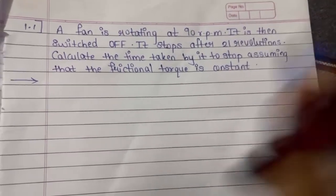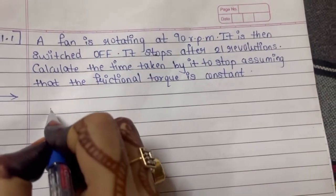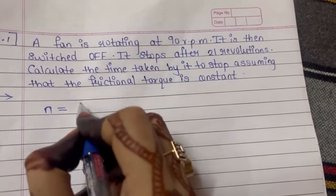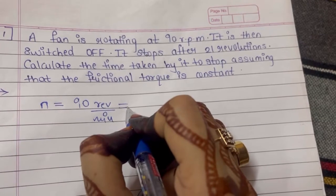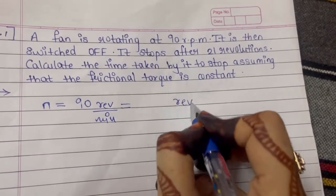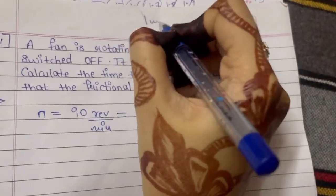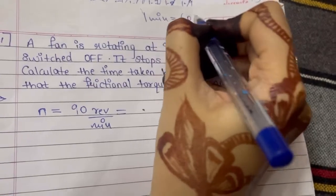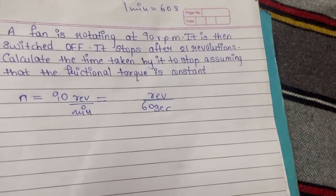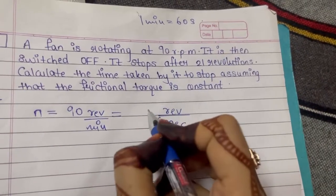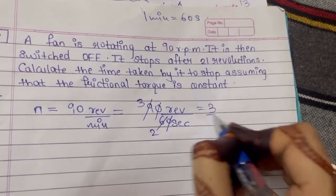Starting with problem 1.1: a fan is rotating at 90 revolutions per minute, so the frequency is given as 90 revolutions per minute. We will convert it into revolutions per second. Since 1 minute equals 60 seconds, we divide by 60. So 90 divided by 60 simplifies — 3 threes are 9, 3 twos are 6 — giving us 3/2 revolutions per second.